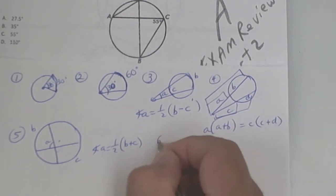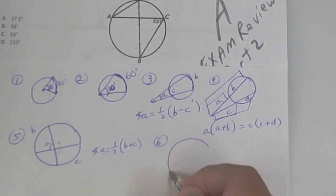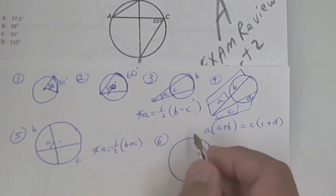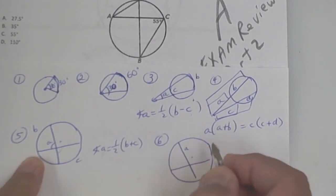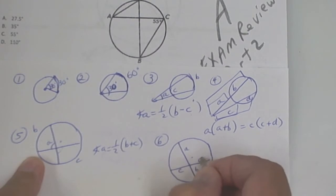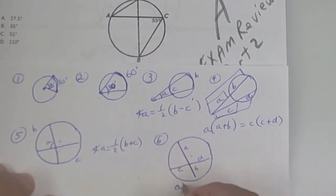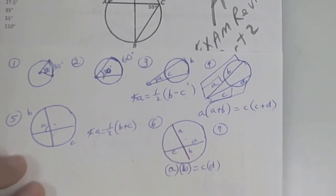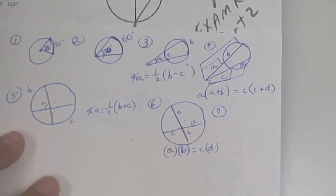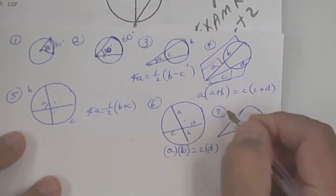Number six is the product rule, and it looks similar to number five. You have segments A, B, C, and D, and you follow the chords — so A times B equals C times D. Again, this is not the order I originally taught you, but that's okay.